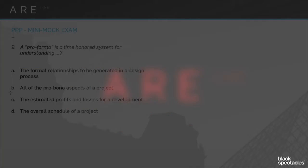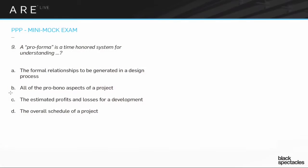All right, let's look at nine. Another term you should absolutely know: proforma. A proforma is a time-honored system for understanding: A, the formal relationships to be generated in a design process; B, all of the pro bono aspects of a project; C, the estimated profits and losses for development; D, the overall schedule of a project.